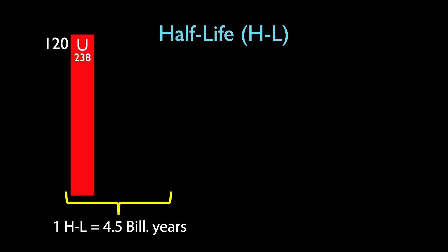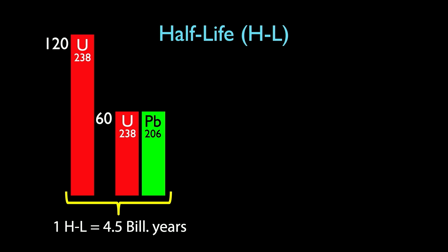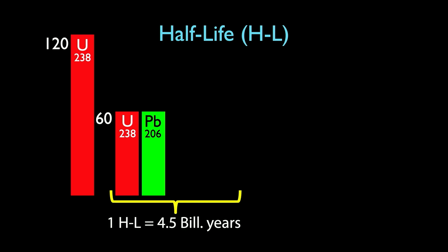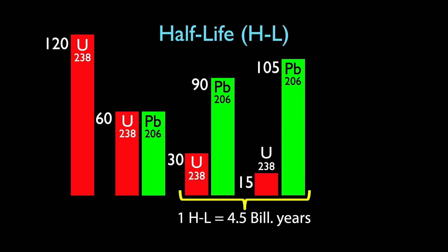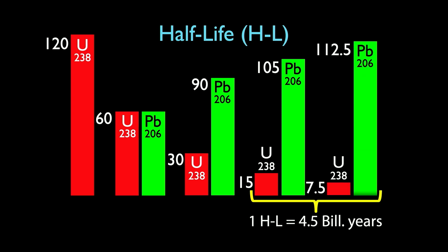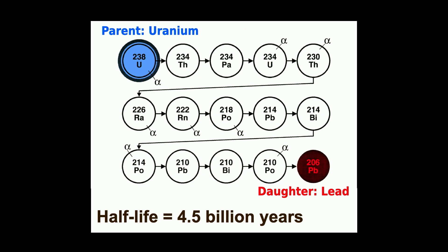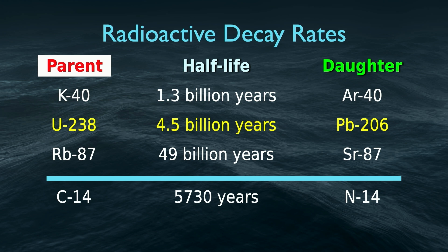After each subsequent half-life, half of the remaining uranium atoms change into lead, continuing until eventually all uranium has decayed to lead. The decay process for uranium is complex, going through about 15 steps before reaching the stable isotope of lead. Different isotopes have very different half-lives: potassium-argon has a half-life of 1.3 billion years, uranium to lead is 4.5 billion years, and rubidium to strontium is 49 billion years — very different clocks.